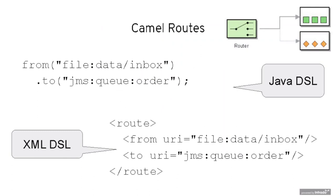Here's a very simple sample of CAMEL routes. We are connecting two different systems — a straight one-to-one integration between a file system and a JMS broker. We just say 'from file' with the directory where to pick up files and specify the queue name. The top corner is the Java code, and in the bottom you can do the same in XML.